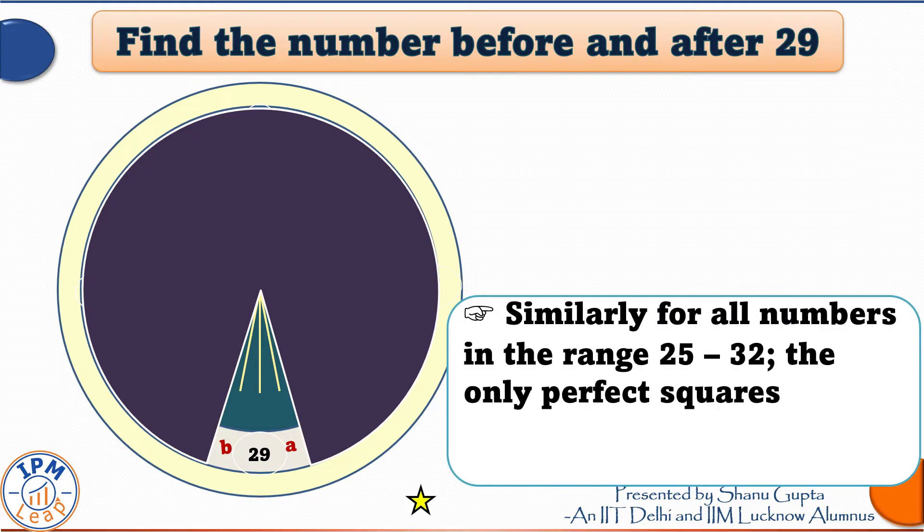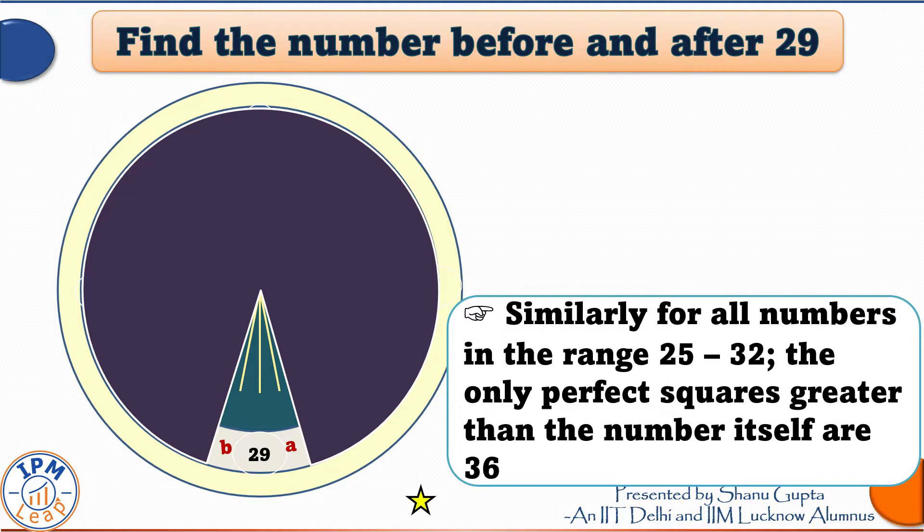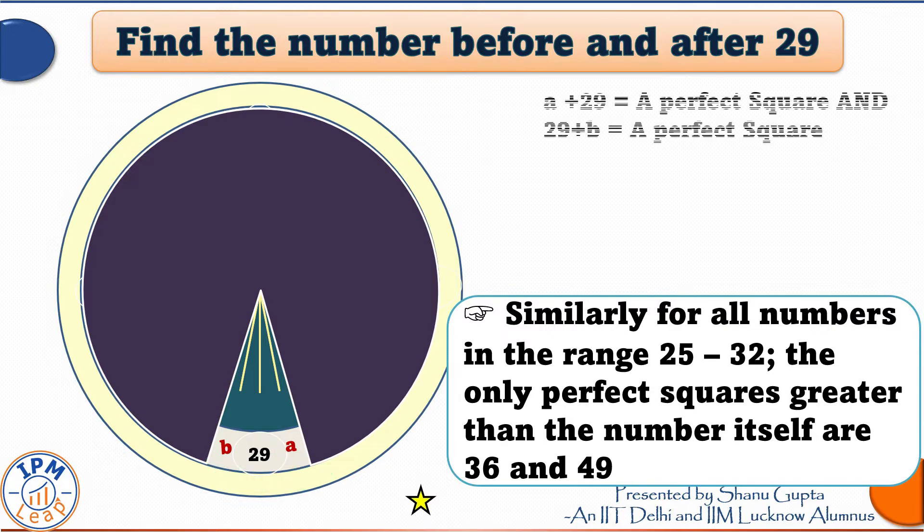Similarly, and I will make a very important point here. For all numbers in the range 25 to 32, the only perfect squares greater than the number itself would be 36 or 49.